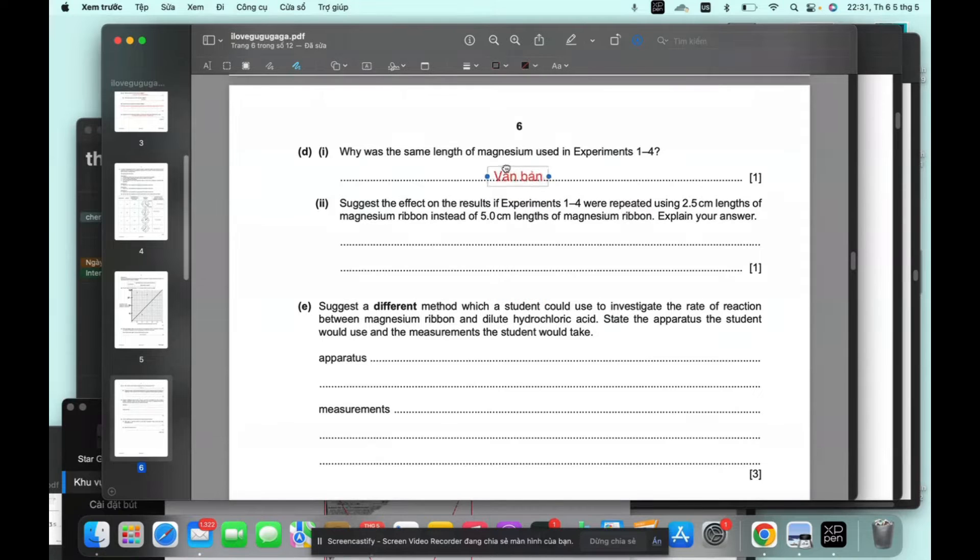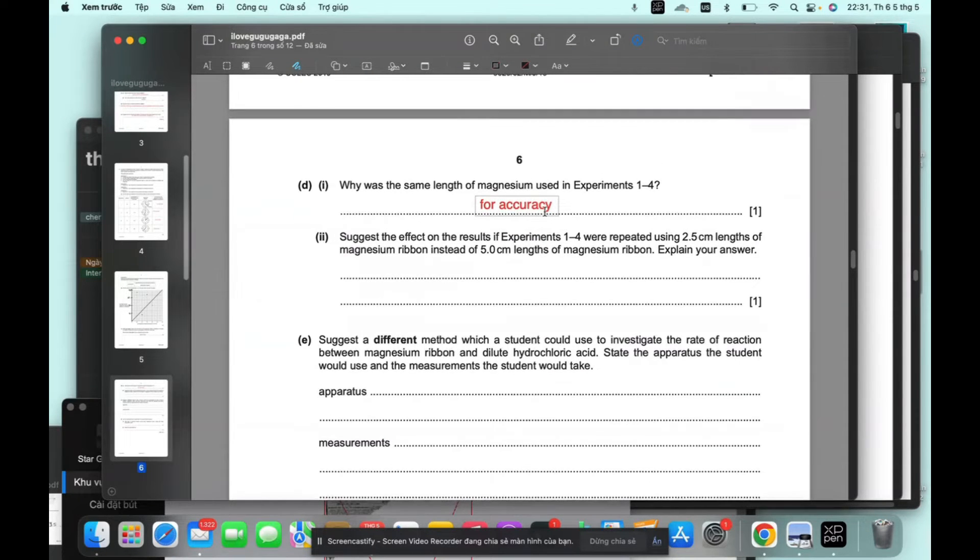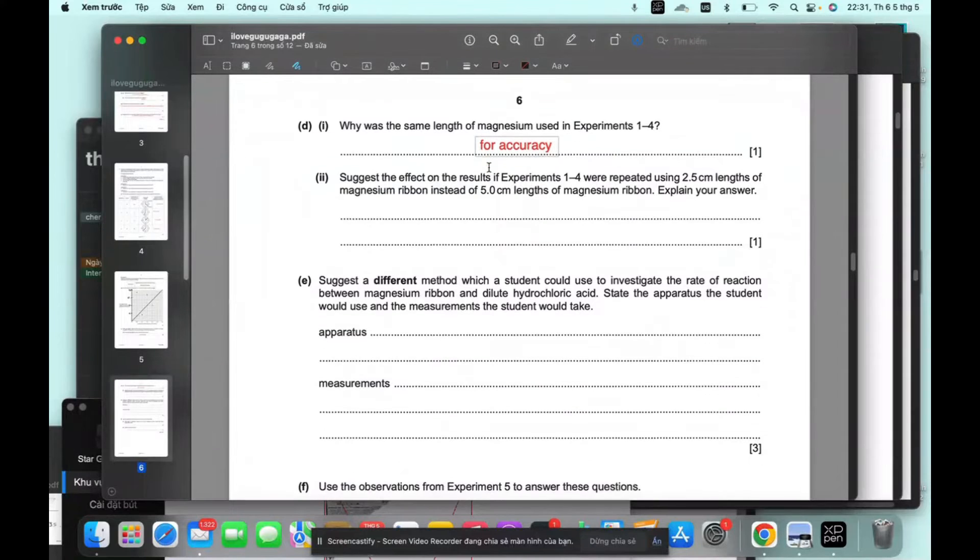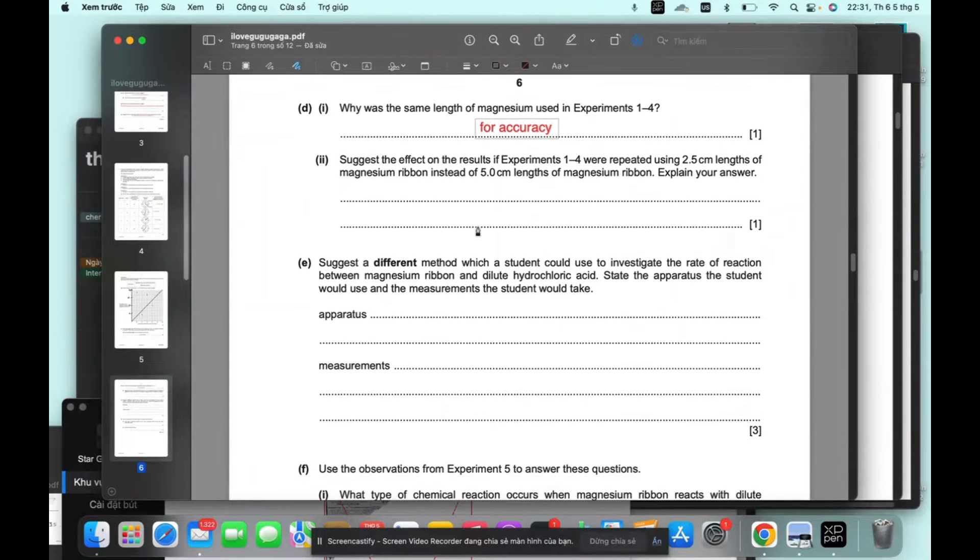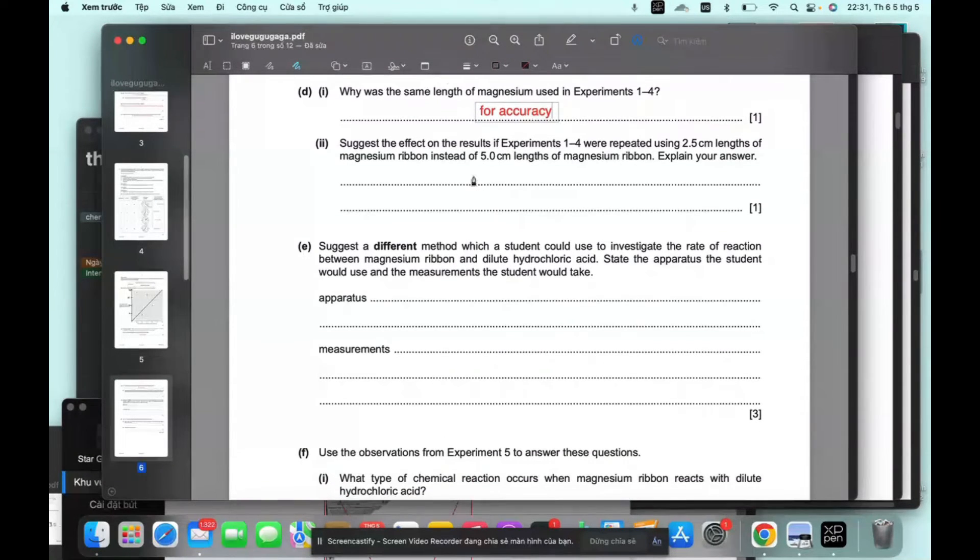What was the same length of the magnesium used in Experiment 2 for accuracy? We always use the same length for accuracy. Ribbon said, length 0.5 was used. It would dissolve quicker because it was shorter.